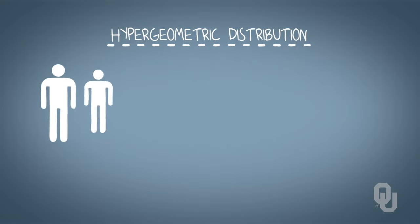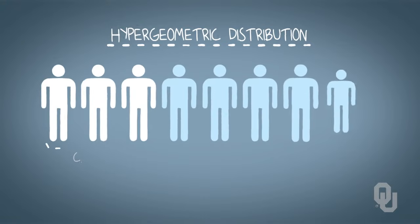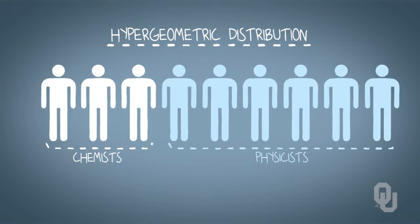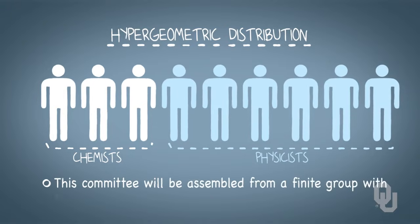Say that we're assembling a committee of size 5 selected at random from 3 chemists and 6 physicists. Other than sounding like a good time, what else do we know about this committee? We know that it's being drawn from a finite group, and we know that the group is made up of two categories, chemists and physicists.